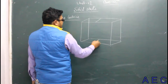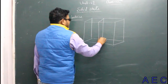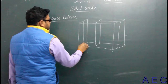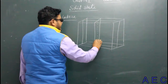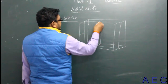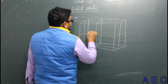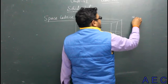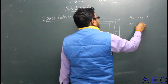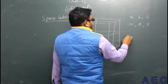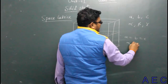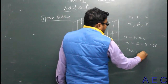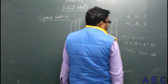In space lattice, we classify the different types of space lattices in which they differ in their edge length and angles. There are total six parameters: A, B, C, alpha, beta, and gamma. If A equal to B equal to C and alpha equal to beta equal to gamma equal to 90 degrees, then this type of lattice is known as cubic unit cell or cubic space lattice.